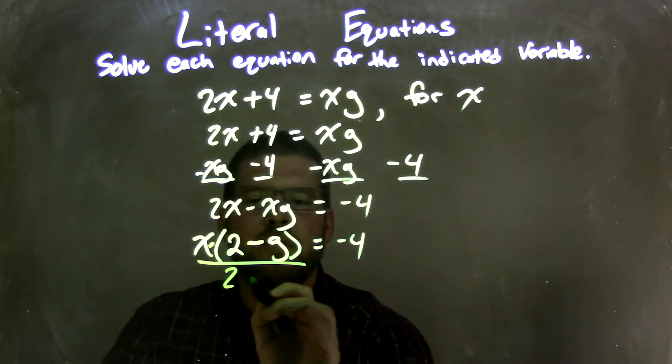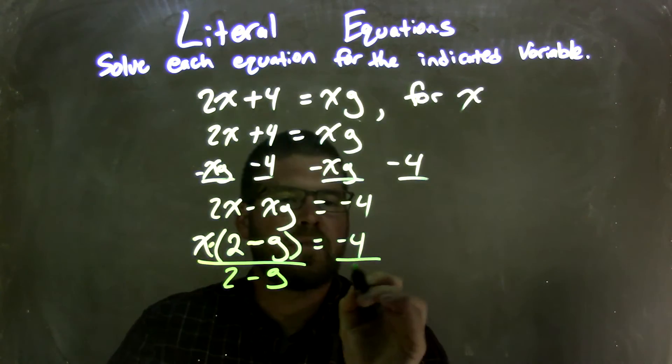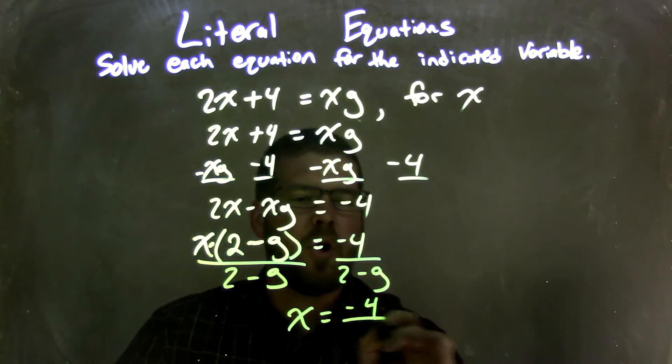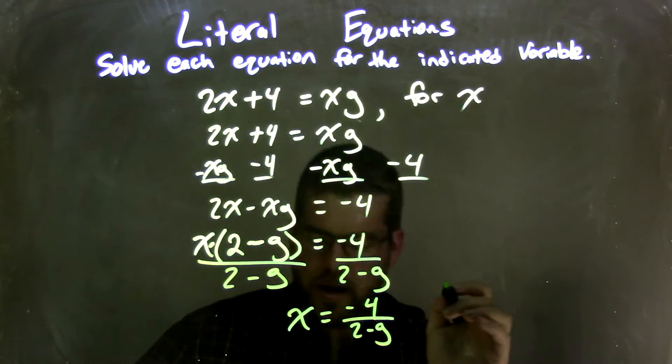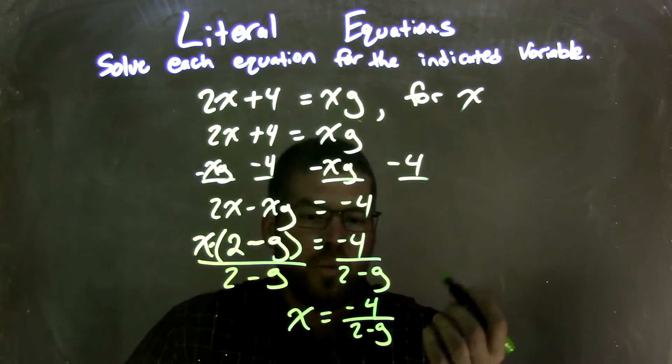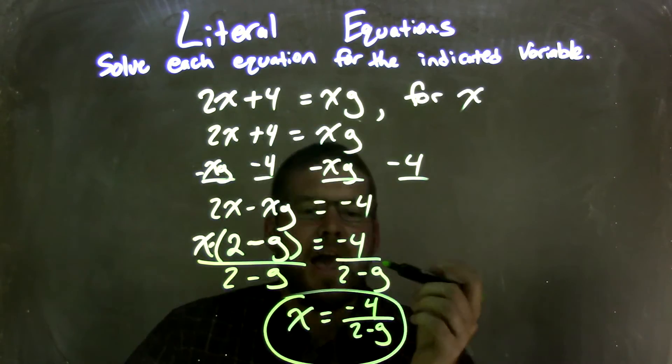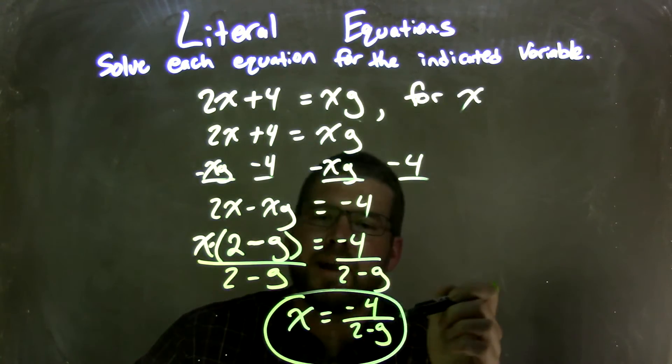I now can divide by 2 minus g on both sides, and that leaves me with x by itself on the left and negative 4 over 2 minus g on the right. From there we're done. We have x isolated, it's by itself, and it's equal to negative 4 over 2 minus g.